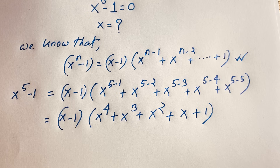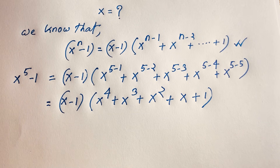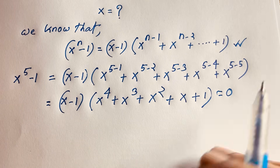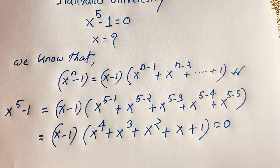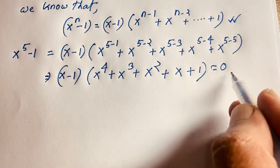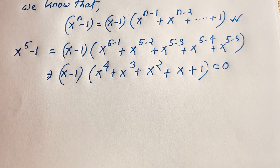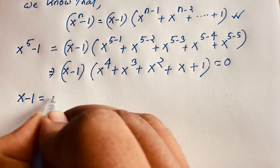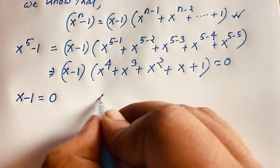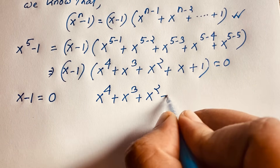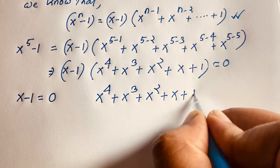So we have the equation: x minus 1 times x to the power 4 plus x cubed plus x squared plus x plus 1 equals 0. This gives us two cases. First case: x minus 1 equals 0. Second case: x to the power 4 plus x cubed plus x squared plus x plus 1 equals 0.